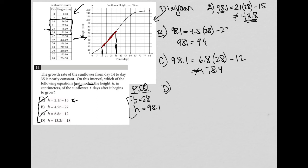Lastly, we try D. Here 98.1 equals 13.2 times 28 minus 18. I calculate 13.2 times 28 minus 18. What I'm getting is 351.6, so definitely far off.